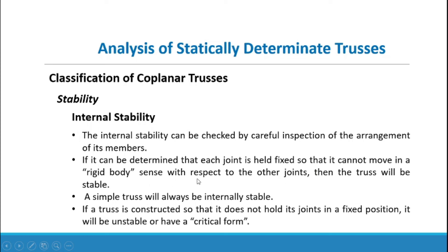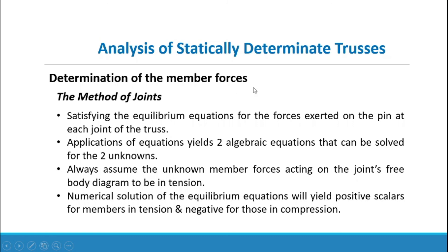For internal stability, it can be checked by careful inspection of the arrangement of its members. If each joint is held fixed so that it cannot move as a rigid body with respect to the other joints, then the truss will be stable. A simple truss will always be internally stable. If a truss is constructed so that it does not hold its joints in a fixed position, it may have a critical form. The first method for determining member forces is the method of joints.